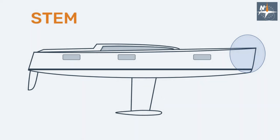The stem is the extreme forward end of the yacht from the keel line to the top of the hull.